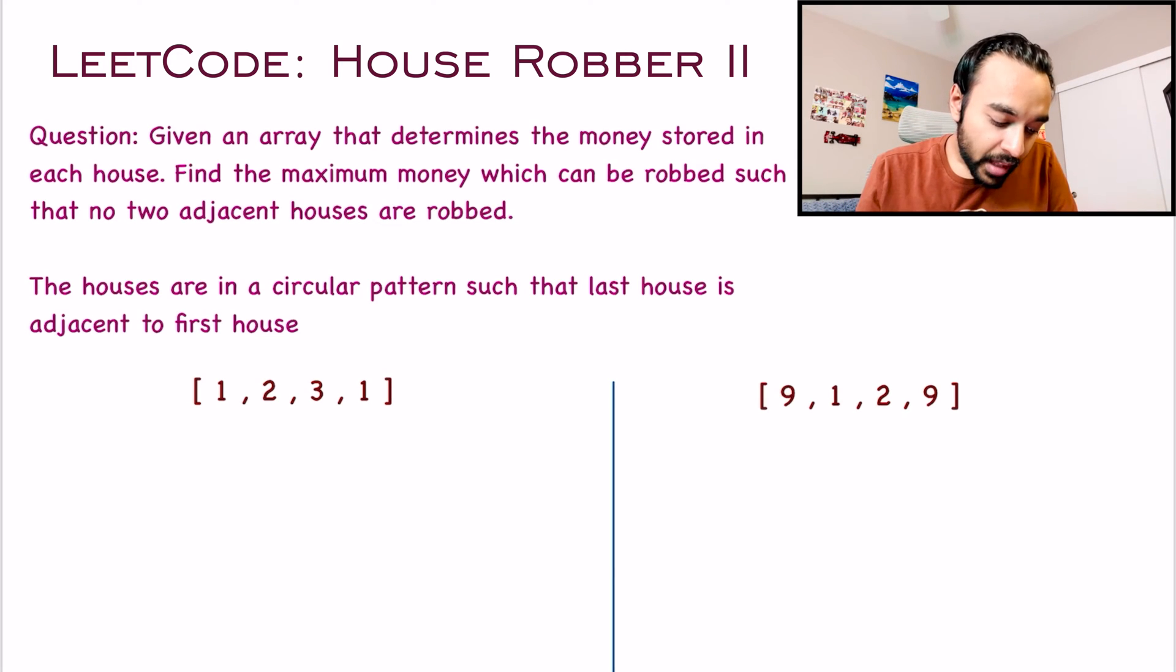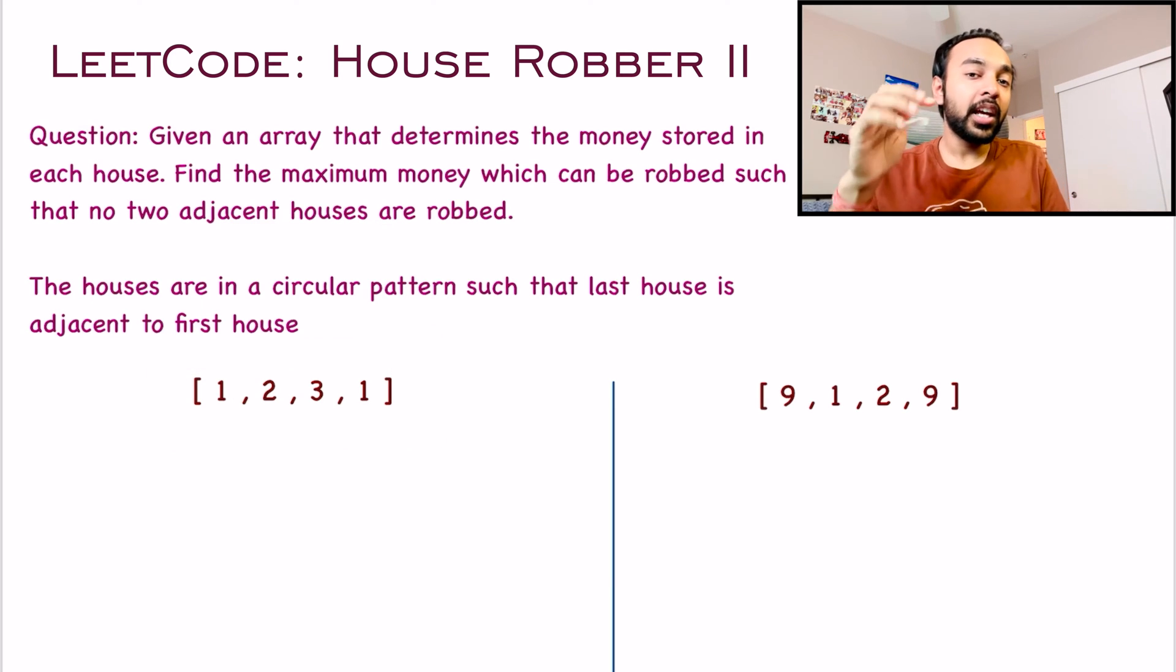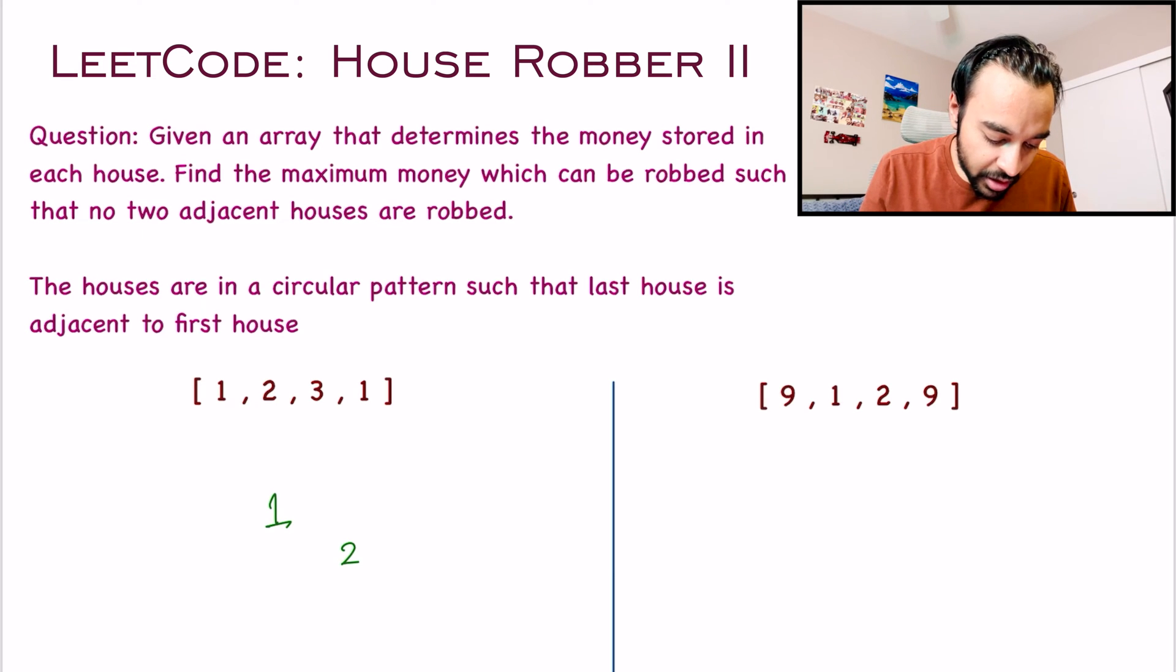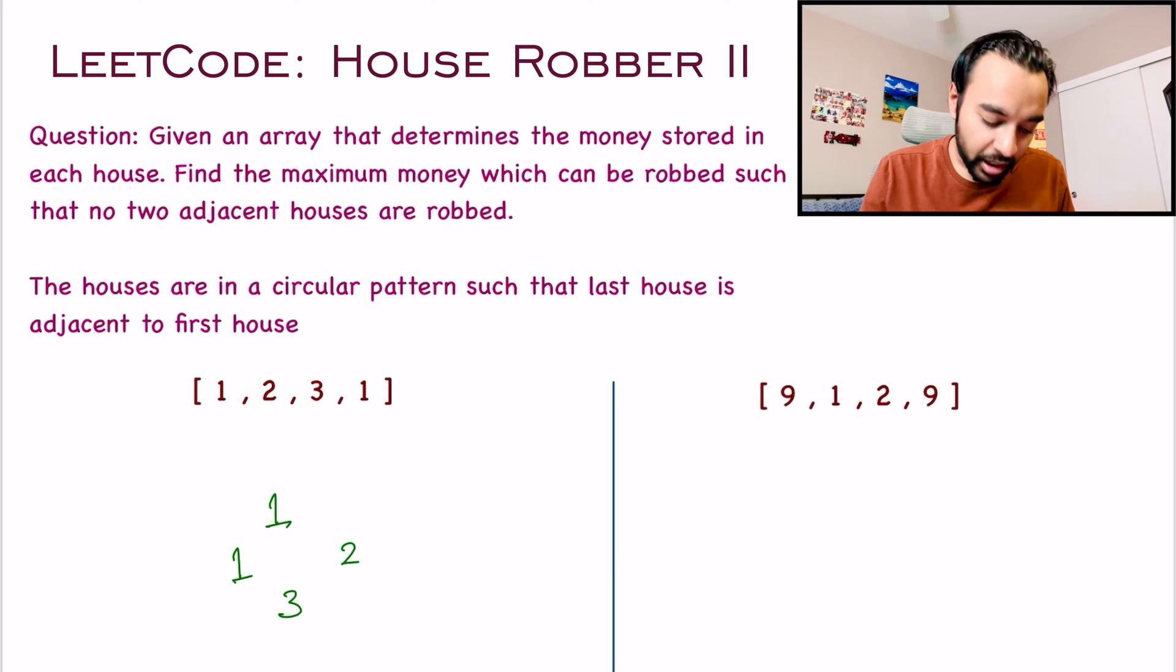So what does that mean? If I am given an array like this, this is determining these are the houses with the money stashed. The problem means that these houses are arranged in a circular fashion. So it simply means that if you are choosing house 1, then you cannot choose these two houses. In this particular test case, you can achieve the maximum loot by robbing the house with money 1 and the house with money 3.